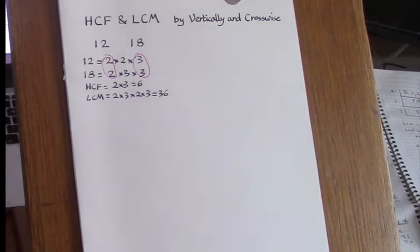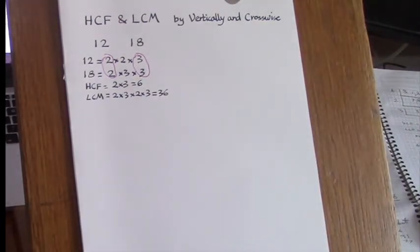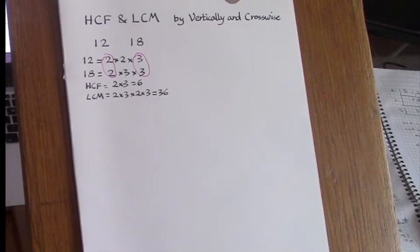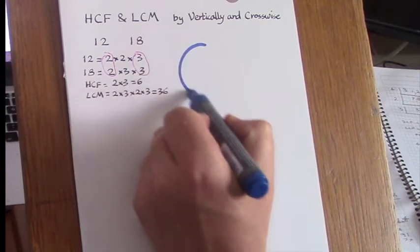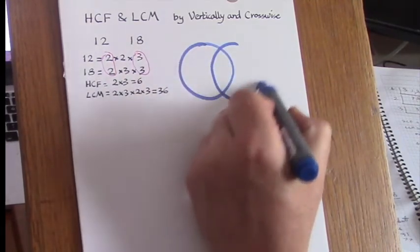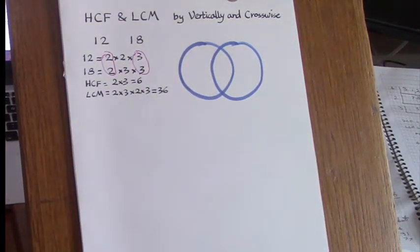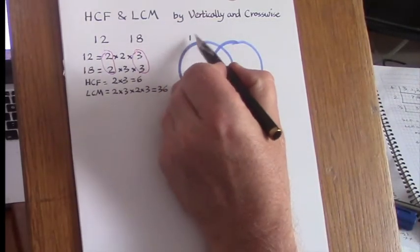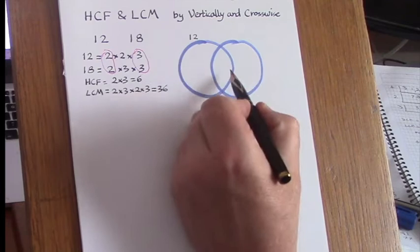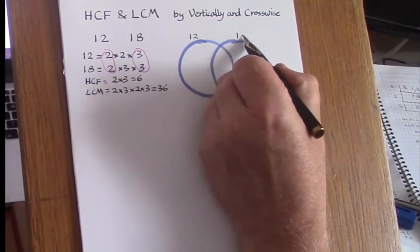The second way in which the HCF and LCM are found conventionally is by placing the prime factors into a Venn diagram like this. This circle represents the factors of 12 and this one for 18.